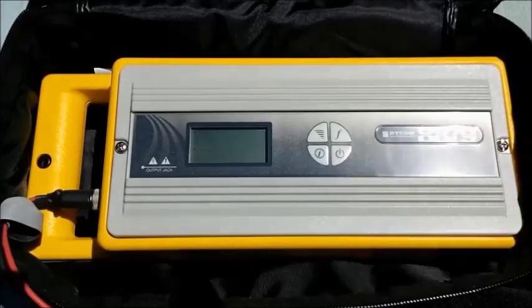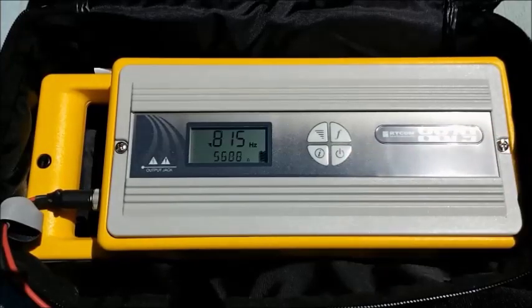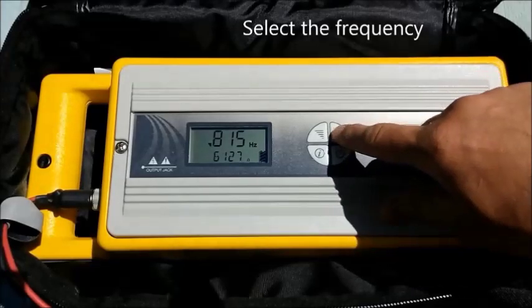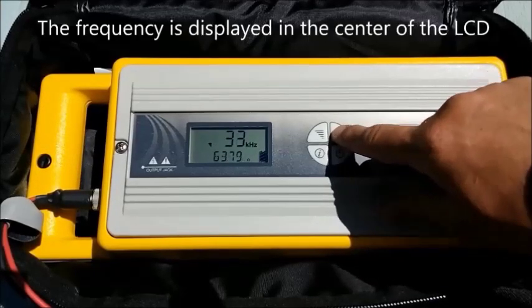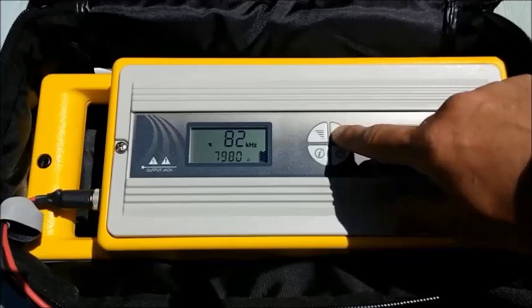Once the signal application method has been applied, turn the transmitter on. Using the frequency button, select the desired locate frequency. The frequency is displayed in the center of the LCD.